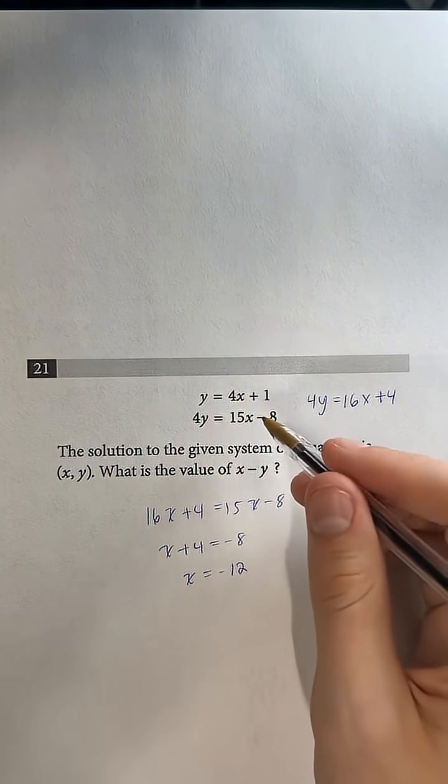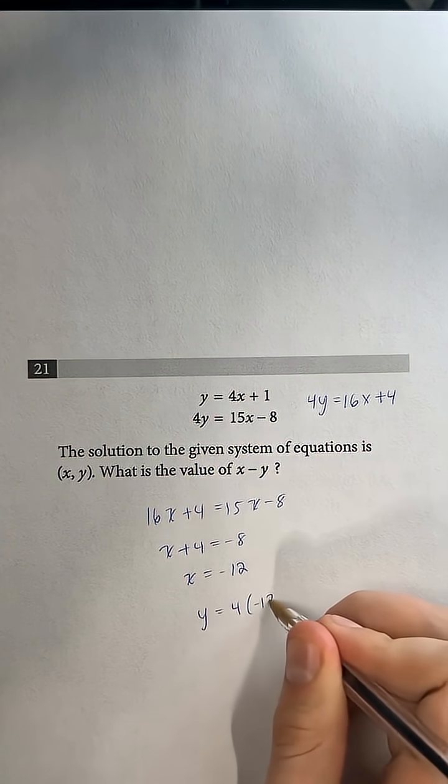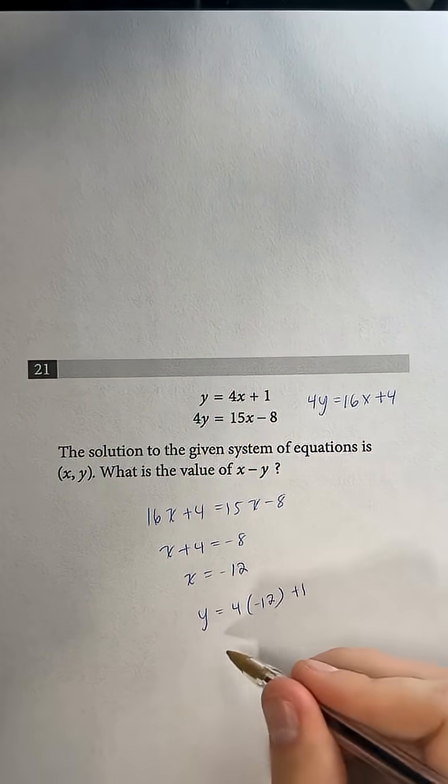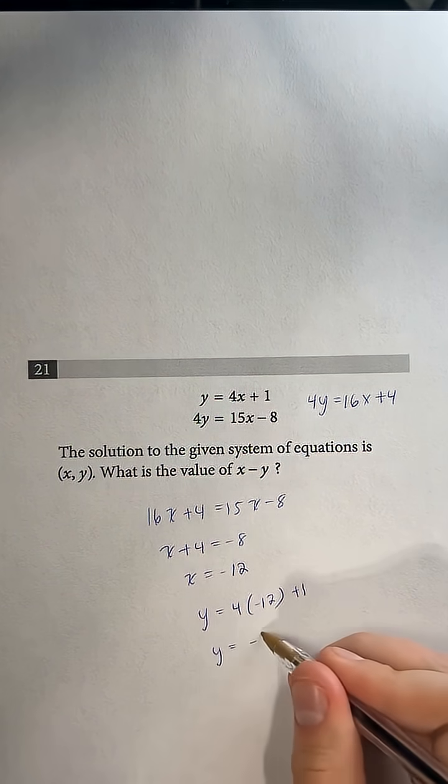So we have y equals 4 times negative 12 plus 1, and so y is going to equal negative 48 plus 1, which is negative 47.